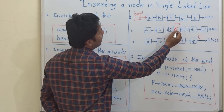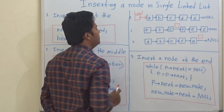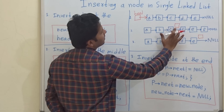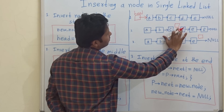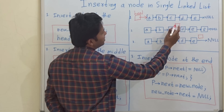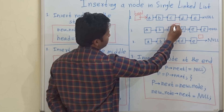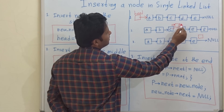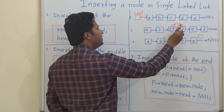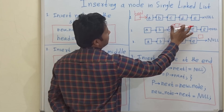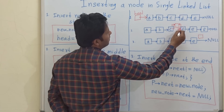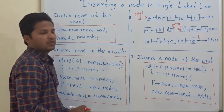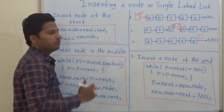Now, we have to insert the node in between C and D. How do we insert the node in between two nodes? The pointer from the first node to the second node changes to point to the new node. The pointer from C will point to the new node, and the next pointer of the new node will point to D. This is how we insert the node somewhere in the middle.